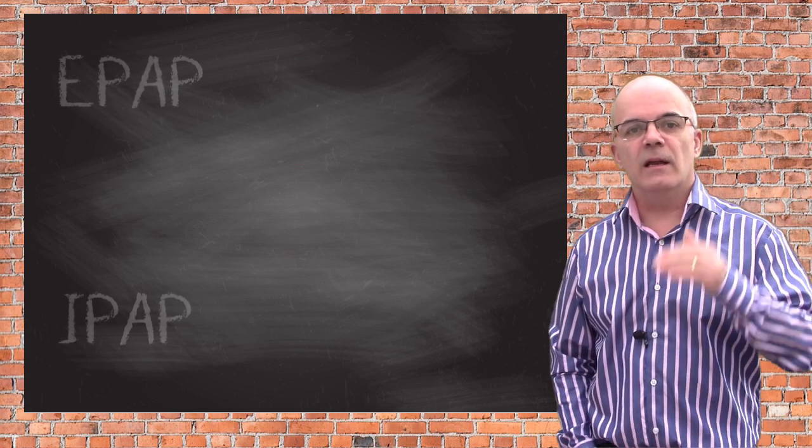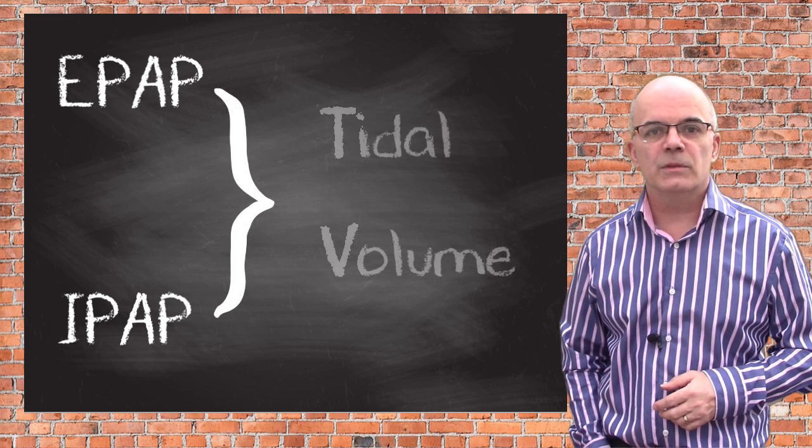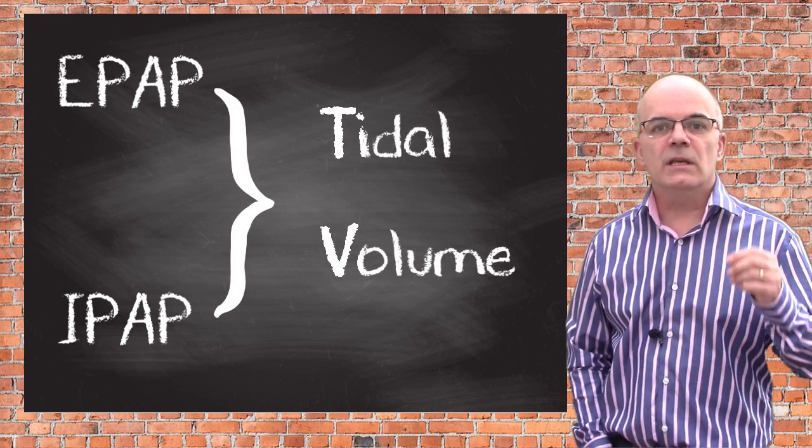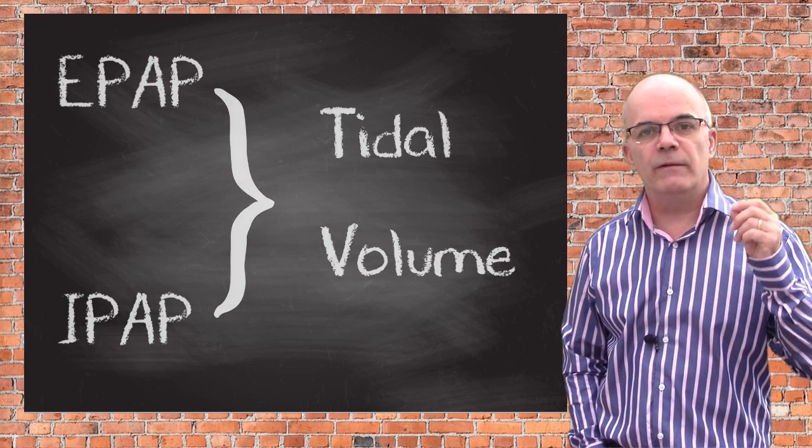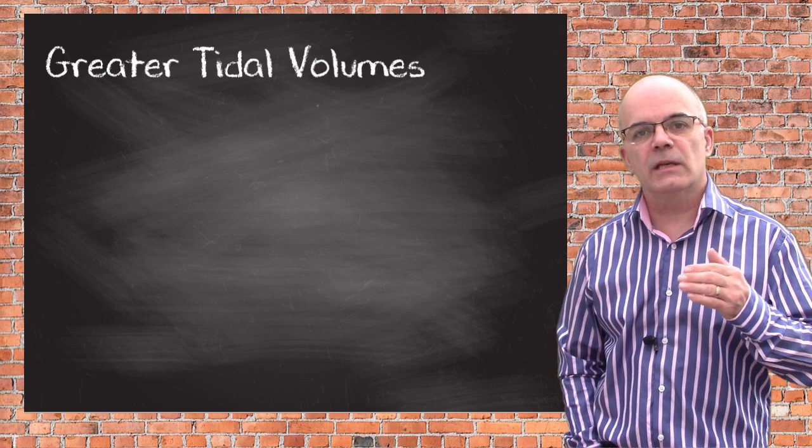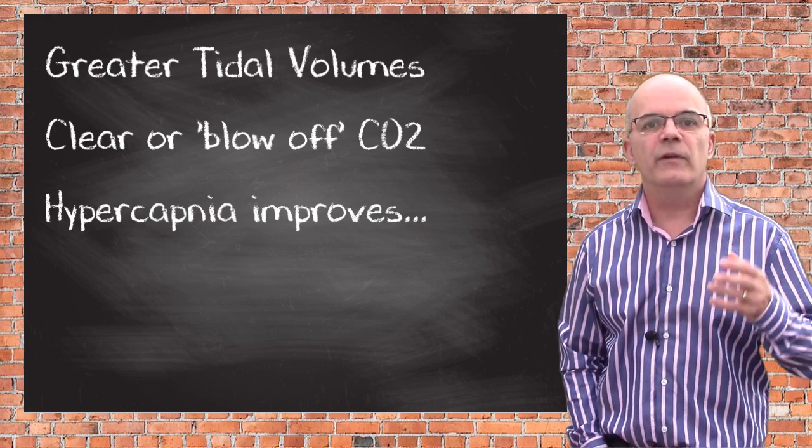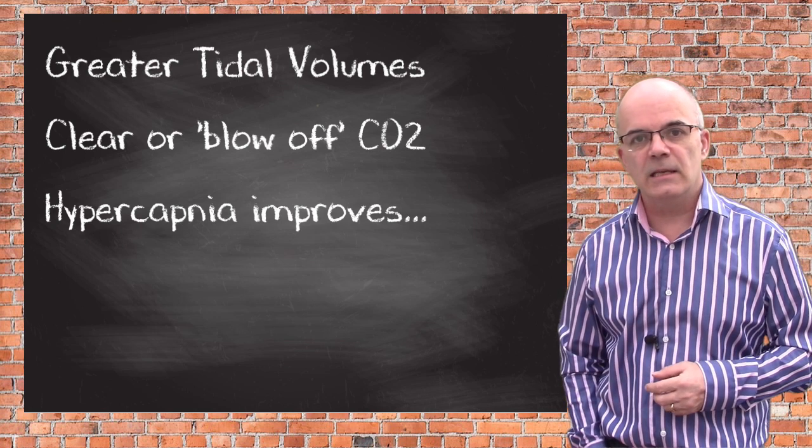The greater the difference between IPAP and EPAP, the greater the patient's tidal volumes. This difference is equal to the pressure support used on invasive ventilation. These greater tidal volumes will help the patient to clear their carbon dioxide, and so their hypercapnia will improve, as will their respiratory acidemia.